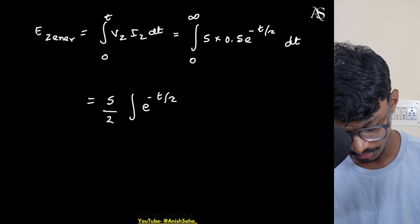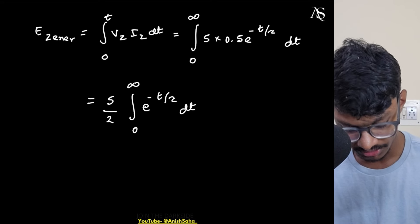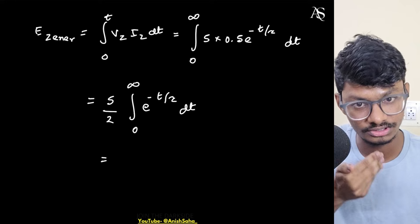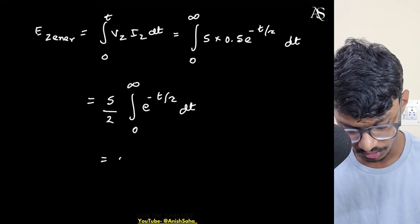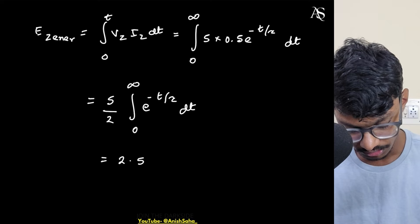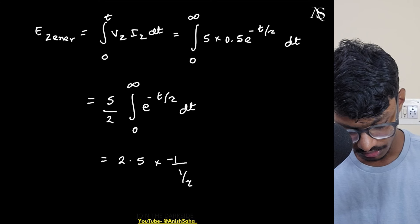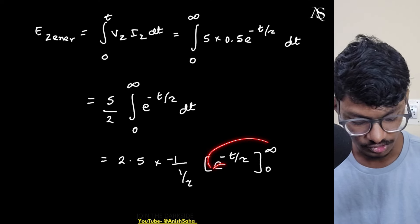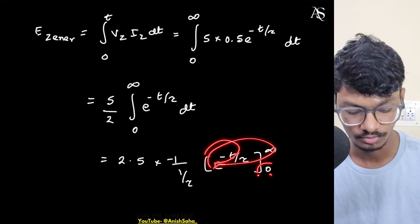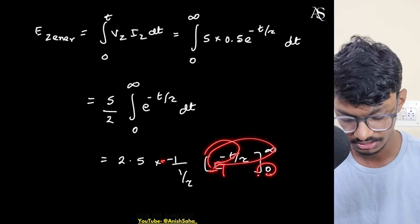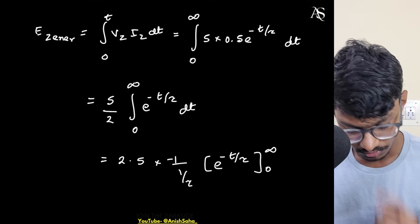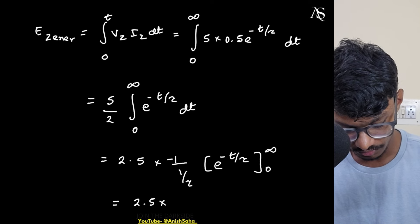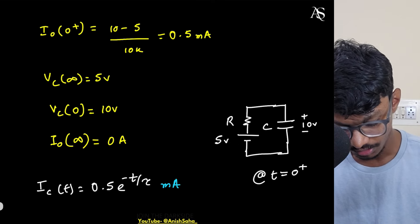Note: in the GATE exam, don't substitute values of R and C at the start — do it at the very end. Evaluating the integral: ∫₀^∞ e^(−t/τ) dt = τ. So E_zener = 2.5 × τ millijoules. Here τ = RC, where R = 10 kΩ and C = 10 μF.